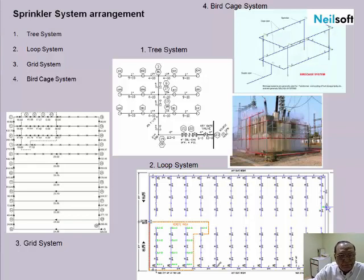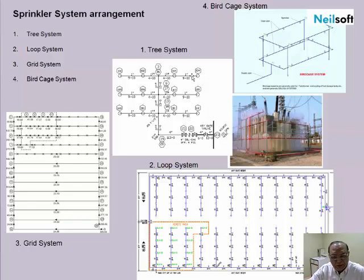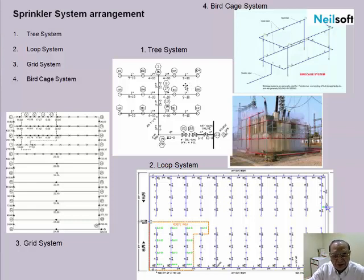How sprinklers are arranged in sprinkler systems: four types of sprinkler arrangements are generally used for firefighting system design. The first, as seen here, is the tree system. The tree system is like having a trunk, branches, and leaves — in the same way, we arrange our sprinklers in any direction, with the design restriction that any branch should not have more than 80 sprinklers.